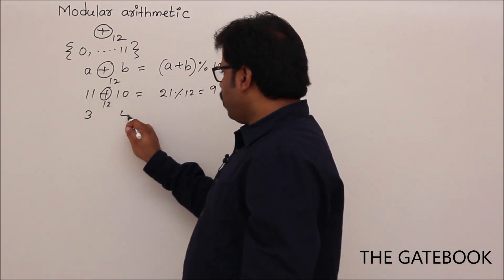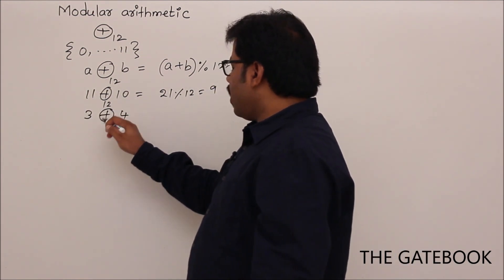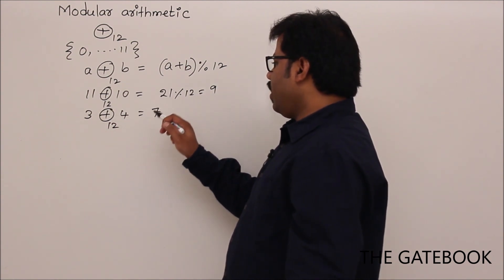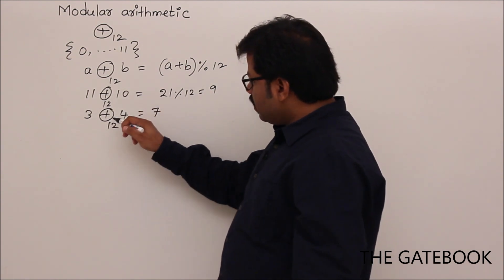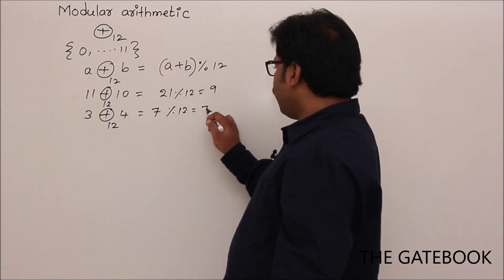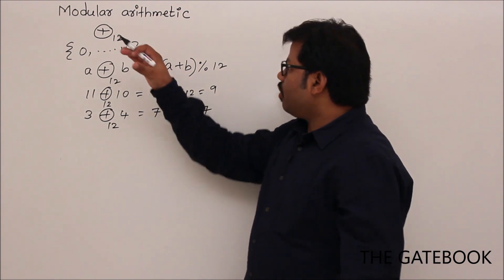Example, if you have 3 and 4, then there is no difference between normal addition and arithmetic modulo 12. 3 plus 4 is 7. Then 3 plus 4, arithmetic modulo 12 also, 7 percentile 12, which is nothing but 7. So this is about arithmetic modulo.